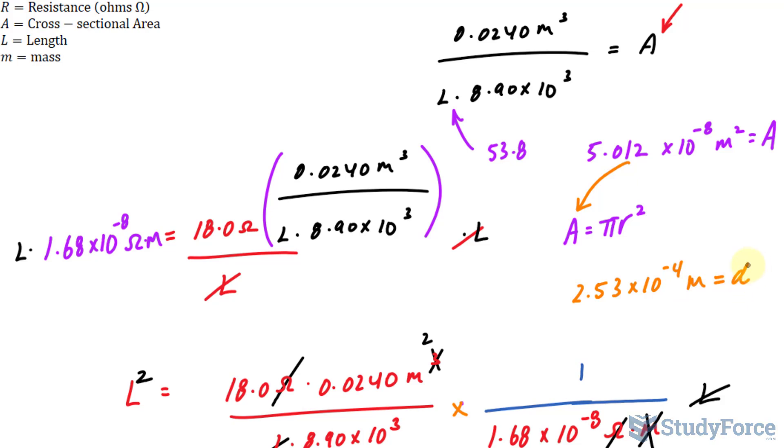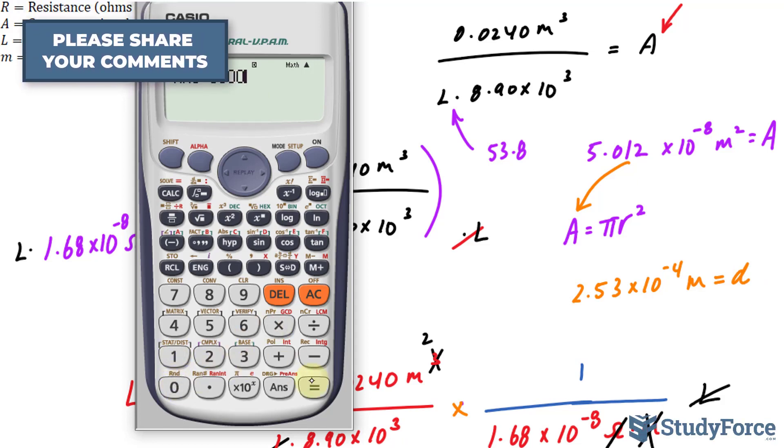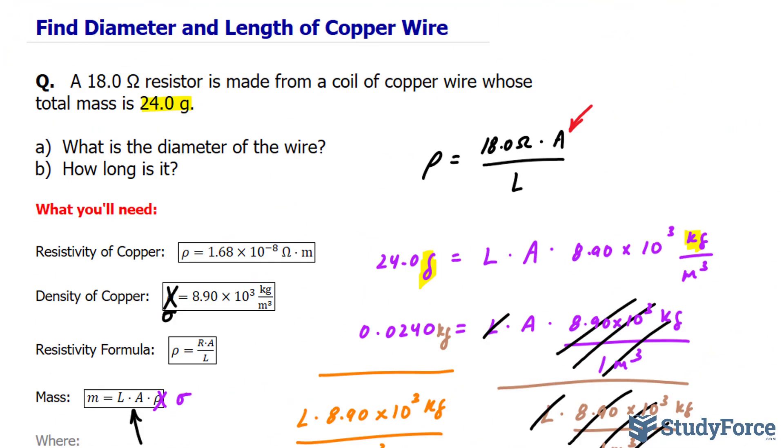Now, if you don't want it in meters, you can write it down in millimeters. So from meters to millimeters, we multiply by 1,000. That's 0.252 millimeters is the diameter. And there you have it. That is how to find the diameter and length of a copper wire.